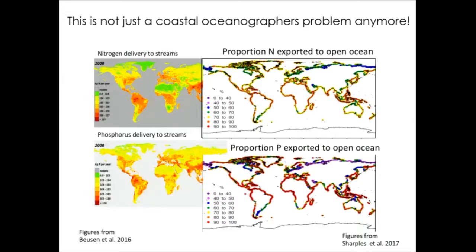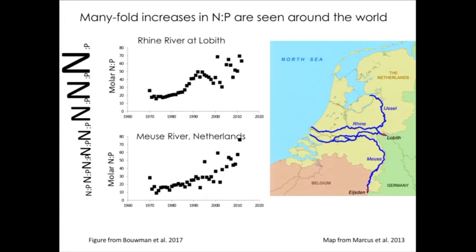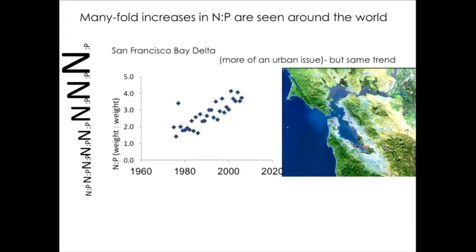Let's take a look at some regional examples. The Rhine and the Meuse rivers export into the North Sea — there's an eightfold difference in N:P export over the past several decades. We see the same thing in estuaries around the world, including San Francisco Bay Delta. That system is a little different — it's not driven entirely by agricultural nutrients. It's an urban issue as well. There's a reason San Francisco Bay Delta is called the 'Toilet Bowl Estuary' — it has enormous export of ammonium from sewage discharge into the estuary.